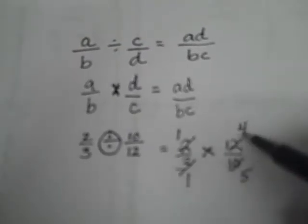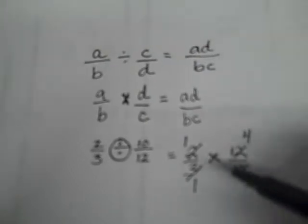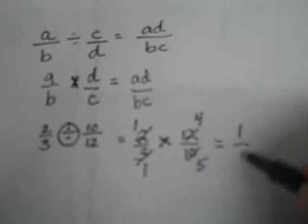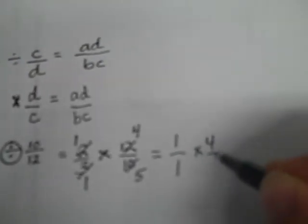I check to see if I can cross cancel anymore other than pulling out a factor of 1, and the answer is no. Now I'm checking to see if I can simplify anymore with 4 fifths. Can't do that, and with 1 over 1, I can't do that either.